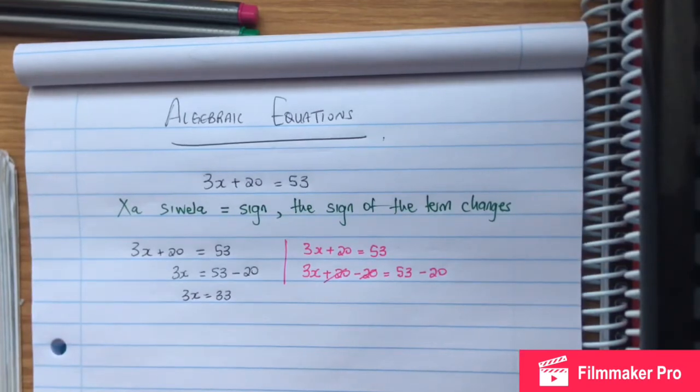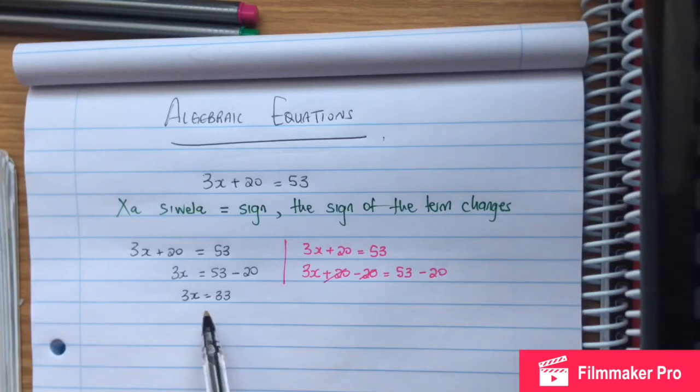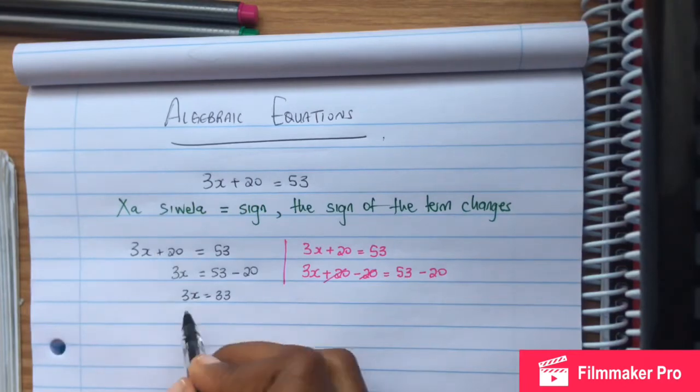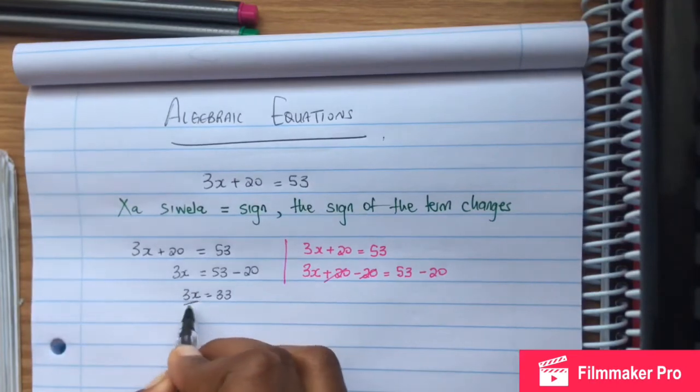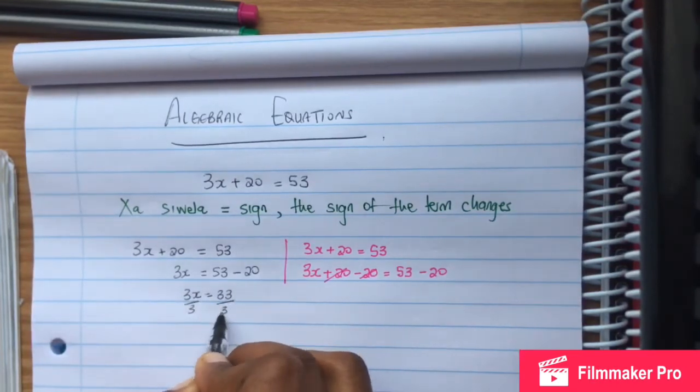Then 53 minus 20 is 33. So we have 3x. Now we have 3x but we want x. We see it's being multiplied, because 3x is equal to 3 times x. We want x, so the opposite of multiply is divide. So we divide by 3 on both sides.